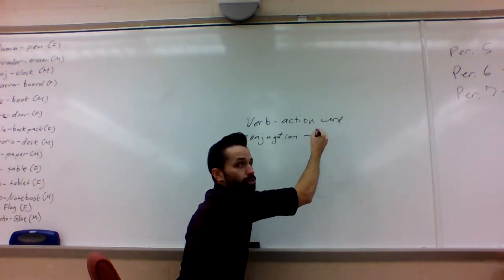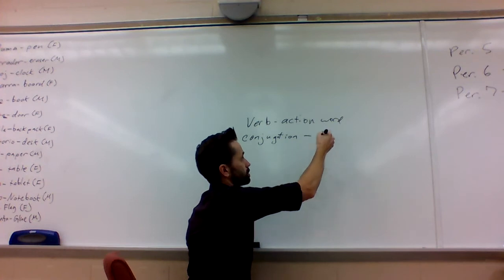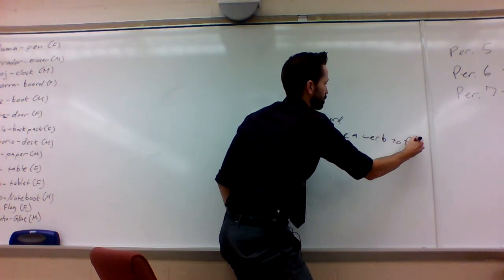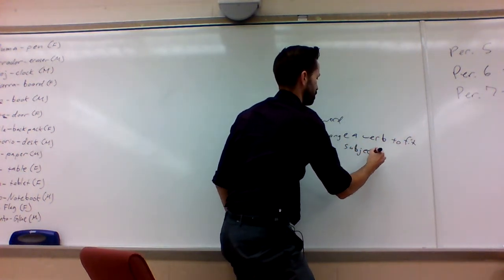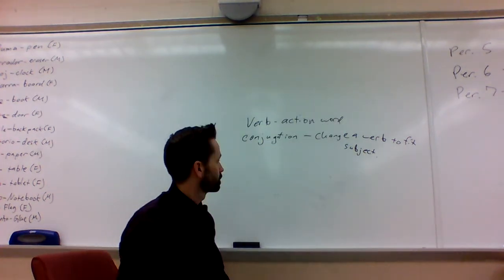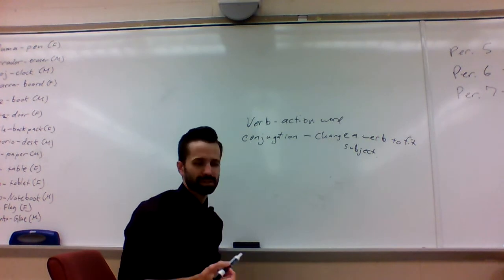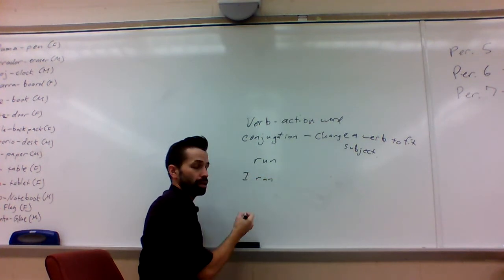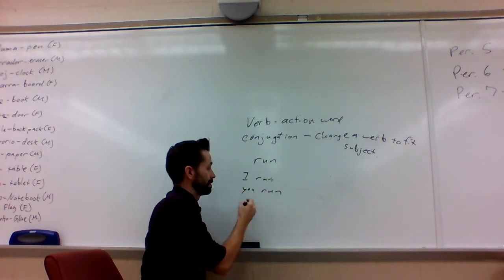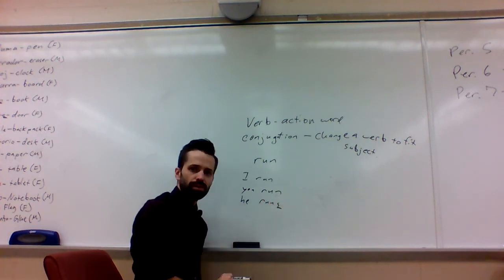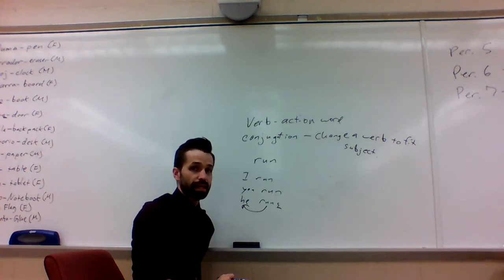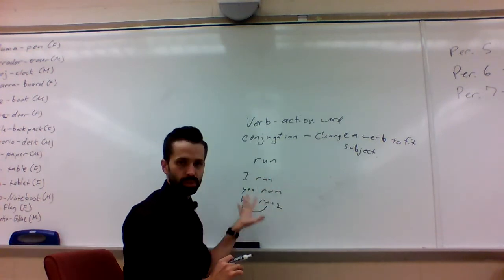Conjugation means to change a verb to fit your subject. So when you change a verb to fit the subject, that's conjugation. In English we do this a little bit but not a lot. So you might take a word like 'run' and that would be 'I run,' 'you run,' but 'he runs.' Here all of a sudden we get an S on this run and that's because it needs to match the person who is doing the running. That's the subject. The person who's doing that action is the subject. So you have to do this in English but just a little bit.